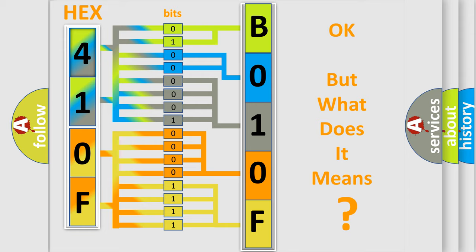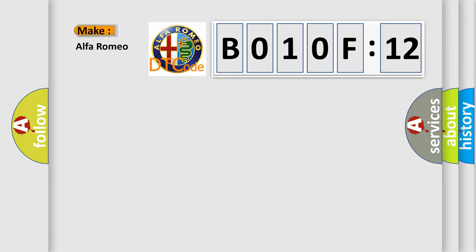The number itself does not make sense to us if we cannot assign information about what it actually expresses. So, what does the diagnostic trouble code B010F12 interpret specifically for Alfa Romeo?